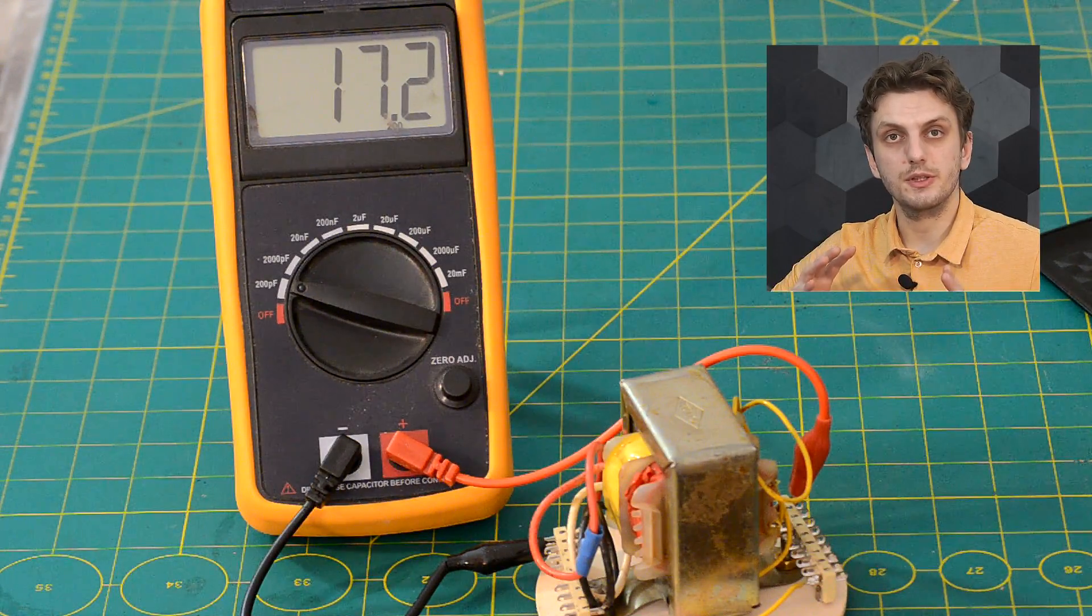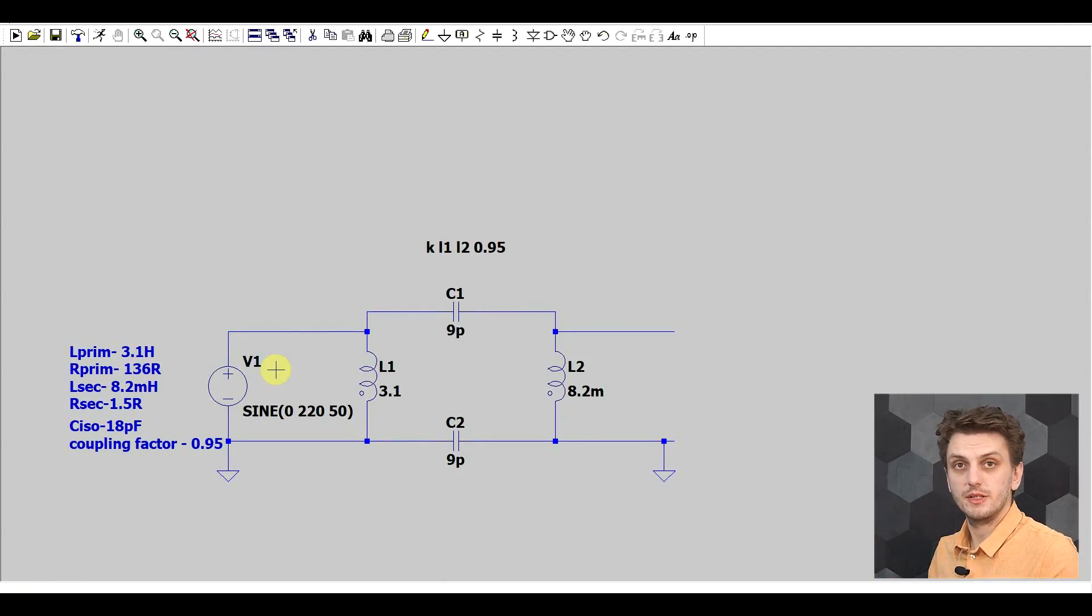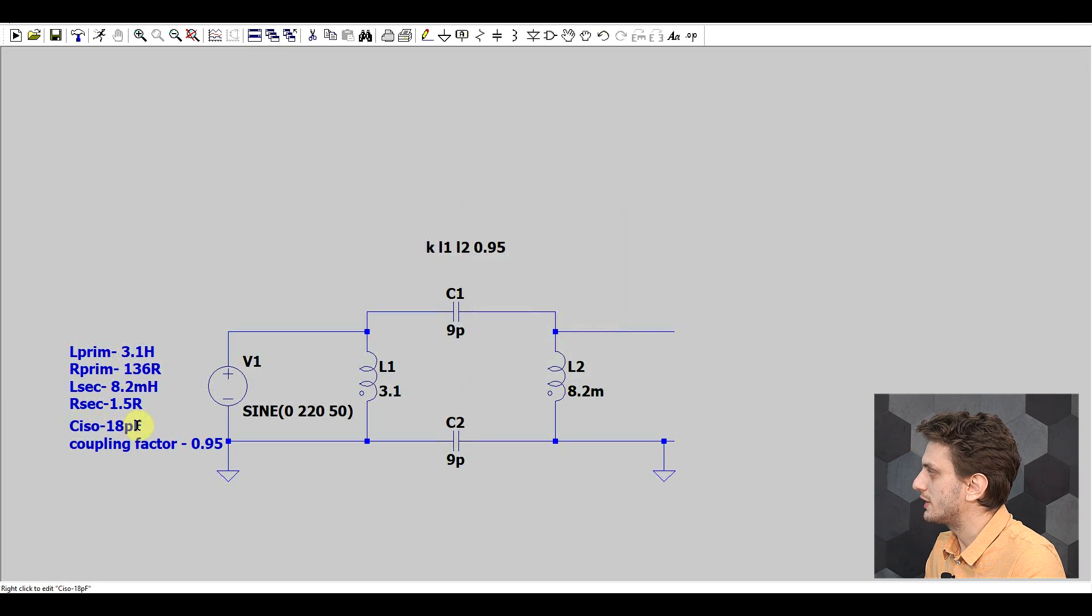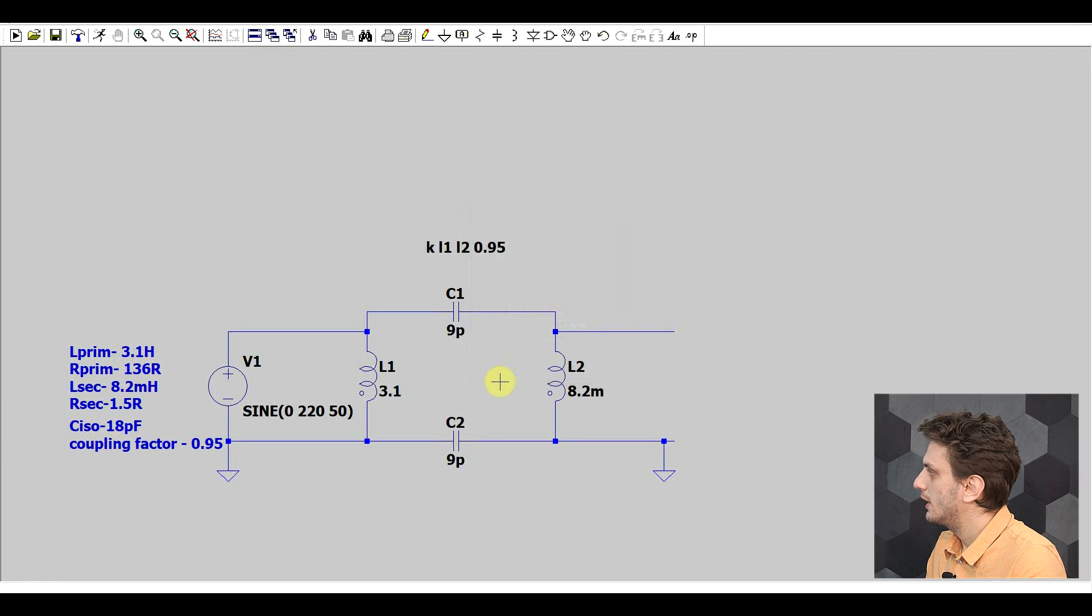So now let's take these parameters and build up a more complex model of our transformer. So based on the data that we collected we can create this sort of model. So we have our primary inductance and resistance both of these are put directly into the inductor and other than these two parameters you could add your parallel resistance and parallel capacitance if you have this information but these are usually quite difficult to obtain. Then I took my winding to winding isolation capacitance and split it up into two equal pieces and then on the secondary side again I added the inductance and the resistance. And finally the coupling factor is inserted into the coupling statement that interconnects the two windings.